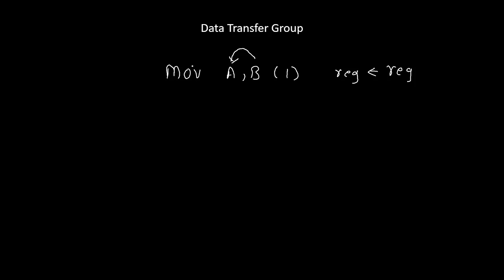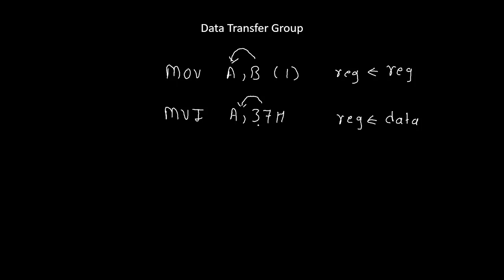Another example of the data transfer group is MVI, which stands for move immediate. MVI A, 37H means transfer the value 37 inside the accumulator — we are transferring data directly inside the register. Since a two-digit number is given, it is a two-byte instruction: the first byte is MVI A and the second byte is 37H.